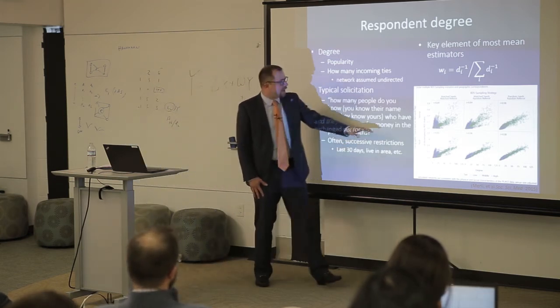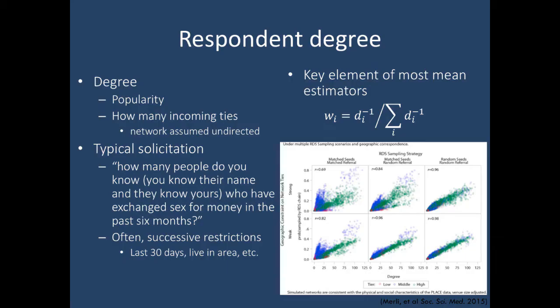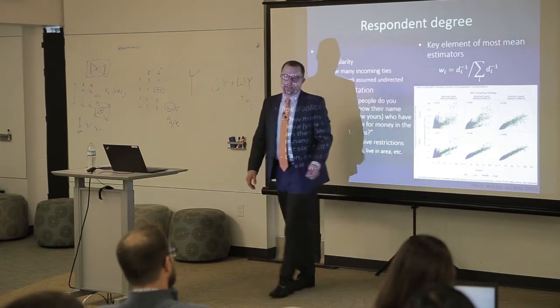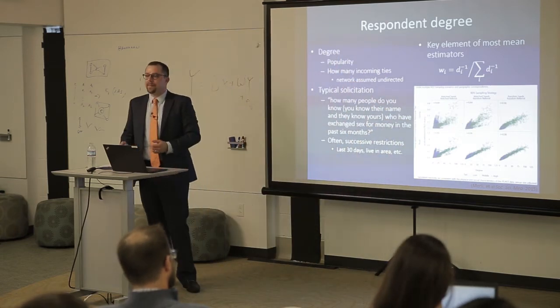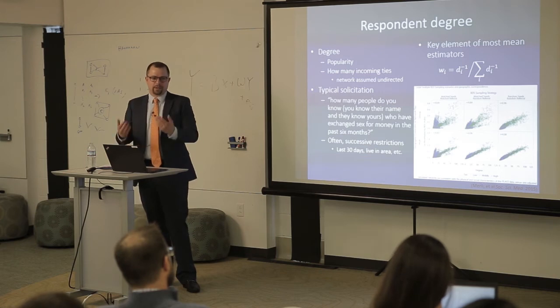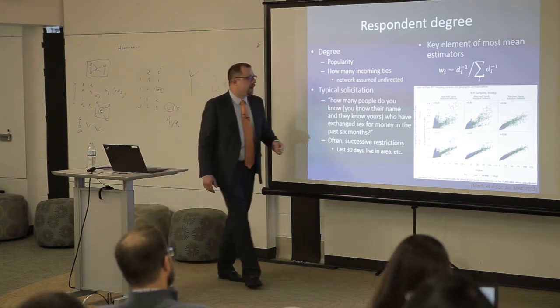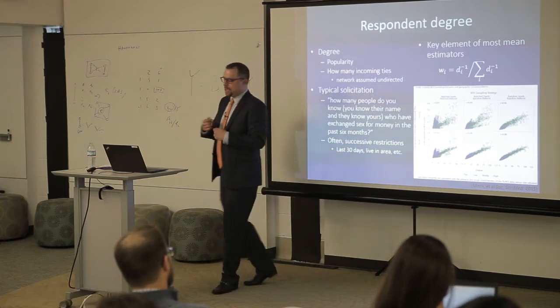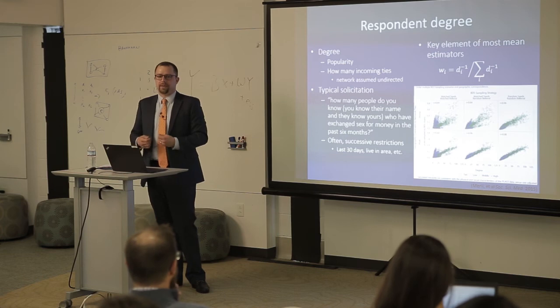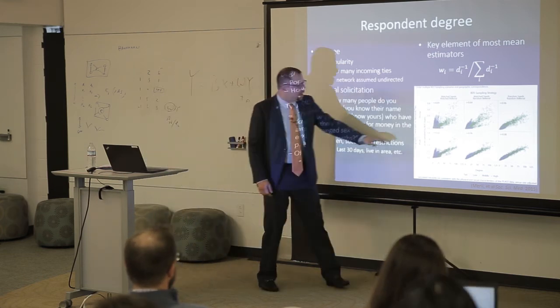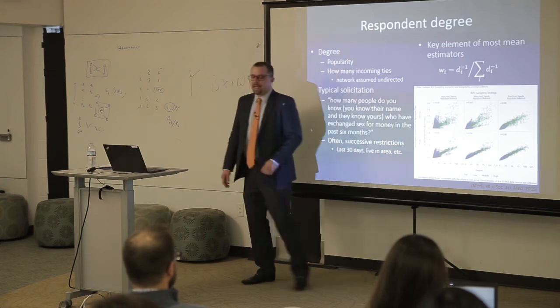RDS often weights people with low degree higher and gives people with high degree lower weights, correcting for the tendency to oversample popular individuals in the network. From Giovanna's research, this gives a good example of how RDS degree-based weights work — individual degree is linearly related to how many times they're sampled in a million RDS simulations when people are conforming to RDS assumptions. In cases where people are recruiting in a more biased fashion or preferentially recruiting certain types of individuals, that correlation starts to break down, which can be a real issue.